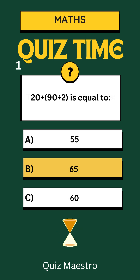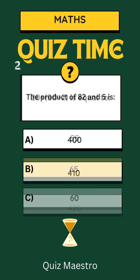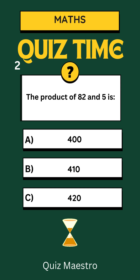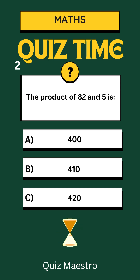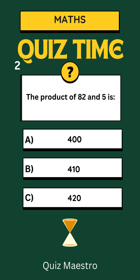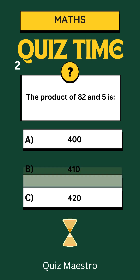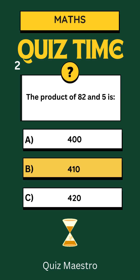Question 2: The product of 82 and 5 is — a) 400, b) 410, or c) 420? The answer is b)